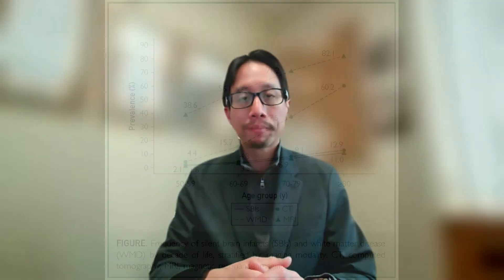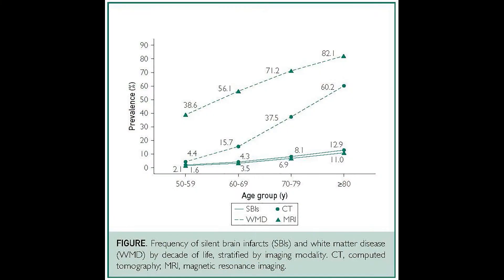We looked at stroke risk factors, which were highly prevalent in this population. We found that the strongest risk factor was age: with each decade of life, the risk of having a silent brain infarct, white matter disease, or both rose in a monotonic fashion.